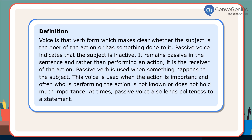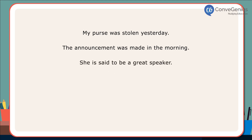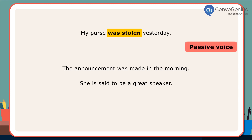Let us look at a few sentences. My purse was stolen yesterday. The announcement was made in the morning. She is said to be a great speaker. In the first sentence, passive voice has been used — the action is important while the doer is not. 'Was' is used with past participle 'stolen' to form passive voice.